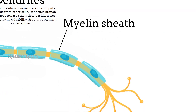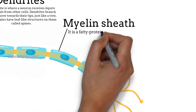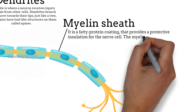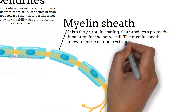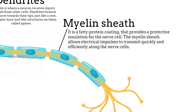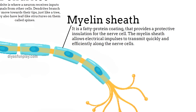Myelin sheath. The myelin sheath is a fatty protein coating that provides a protective insulation for the nerve cell. It allows electrical impulses to transmit quickly and efficiently along the nerve cells.